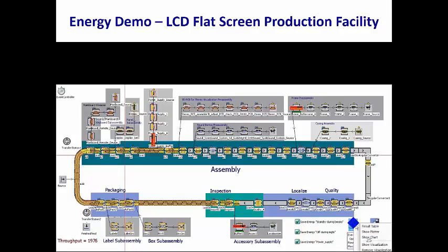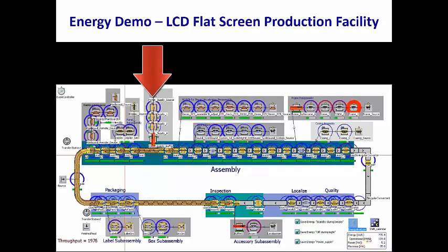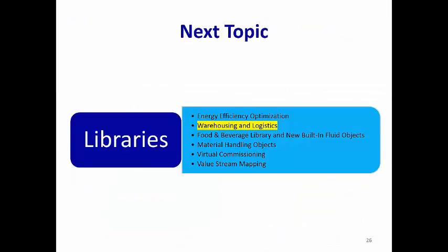If we take another look at the energy analyzer's show visualization option, we can see things have improved dramatically in the power supply area. Instead of solid red circles indicating high energy consumption, power supply stations one and two are now purple, indicating a medium level. There is room for even more optimizations, but I hope you've seen enough to see how useful plant simulation's new energy optimization features can be.